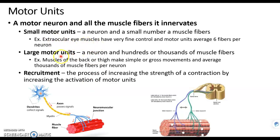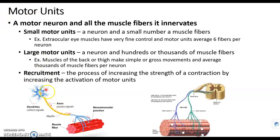We also have very large motor units, meaning one neuron that stimulates hundreds or even thousands of muscle fibers, like our leg muscles or muscles of our back. We don't need precision there — we just need to hold ourselves upright and maintain posture. So we have small motor units or large motor units. The common element is just one neuron; the difference is the number of muscle fibers that neuron stimulates.